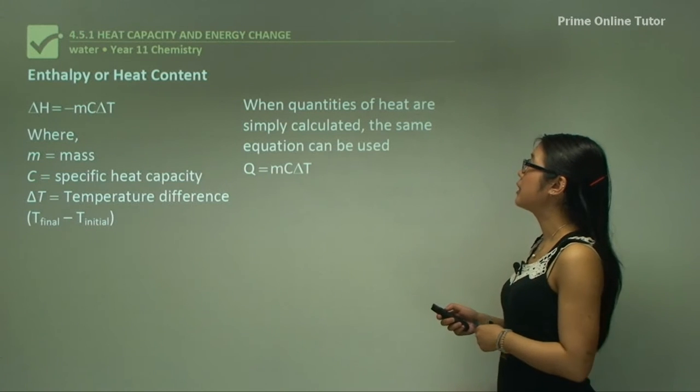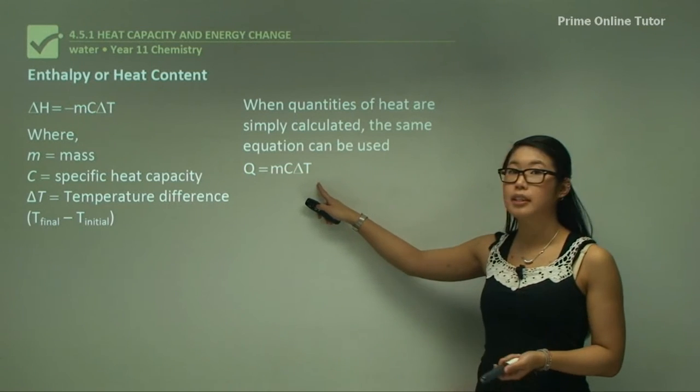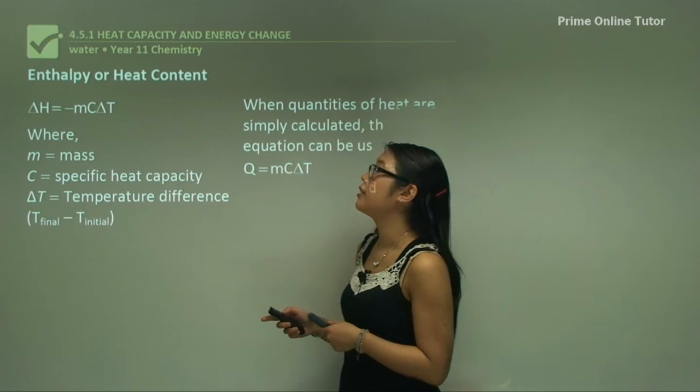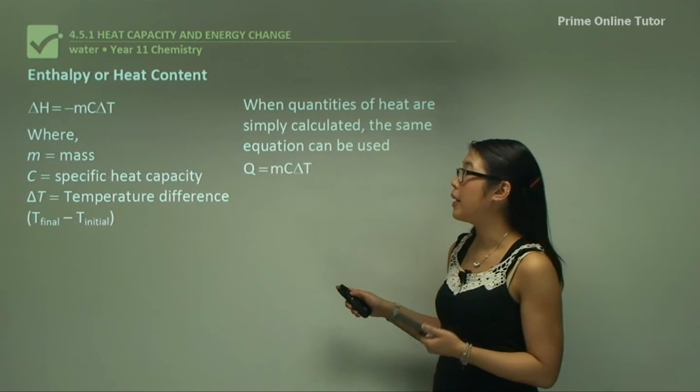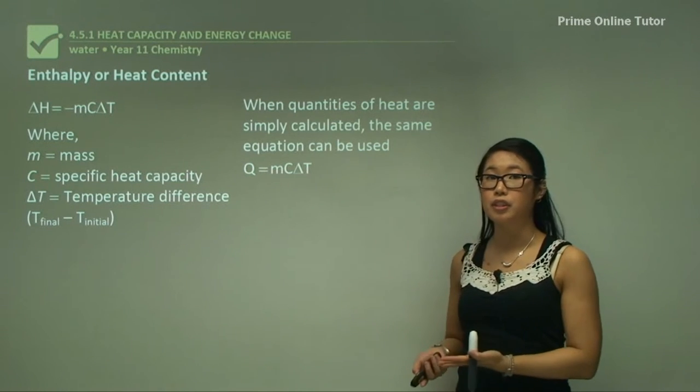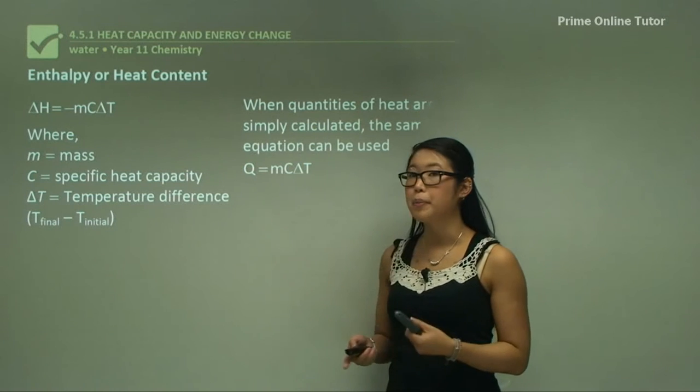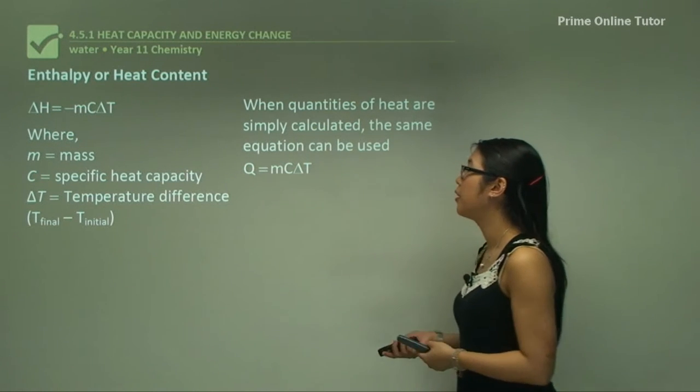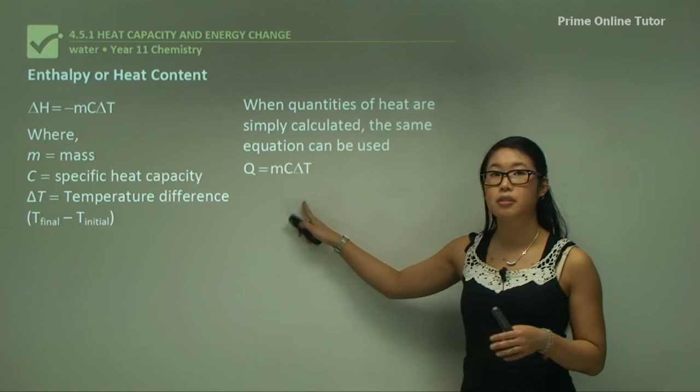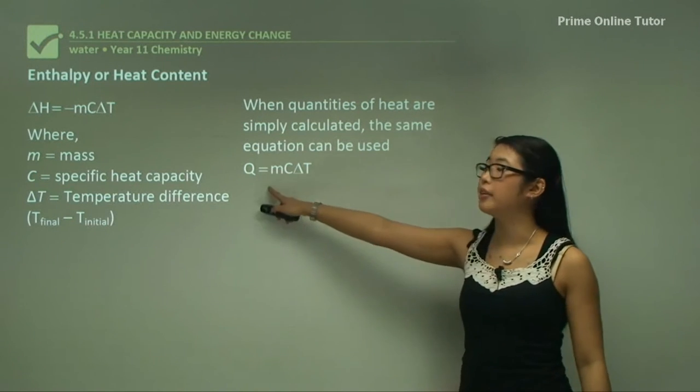When quantities of heat are simply calculated, the same equation can be used: Q = mcΔT. The change in enthalpy ΔH equals negative mass times the specific heat capacity C times the temperature difference ΔT from initial to final state. Q is just the last bit without the negative, so we're not looking at whether it's exothermic or endothermic, we take out the negative sign.